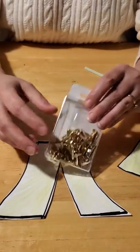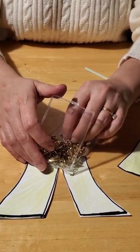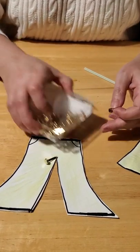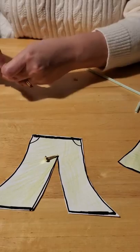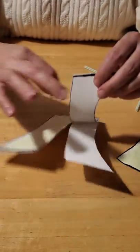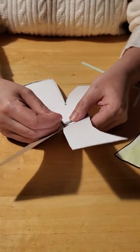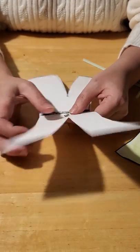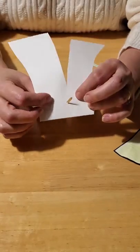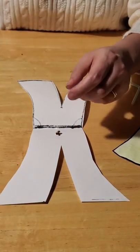Then you want to take a paper fastener if you have these at home. You're going to open up your pants to the inside and poke your paper fastener through right here in the middle. Once it's all the way through, then you want to take your glue.